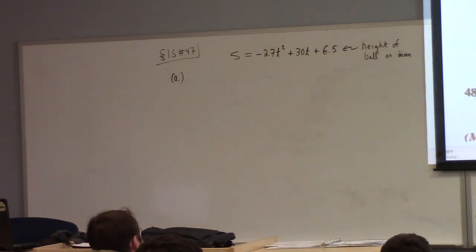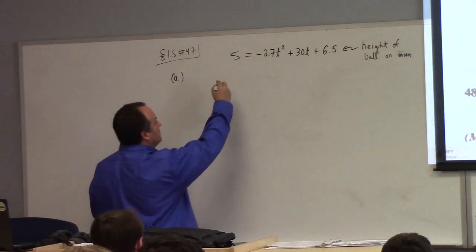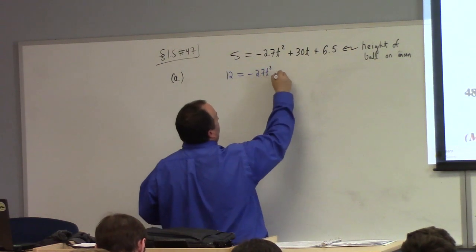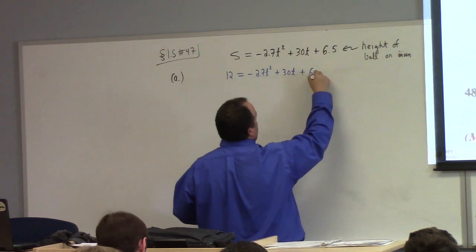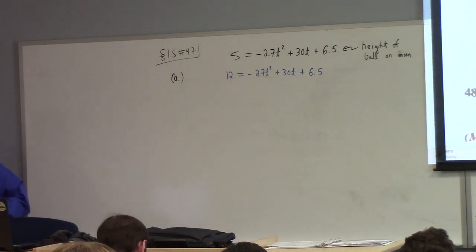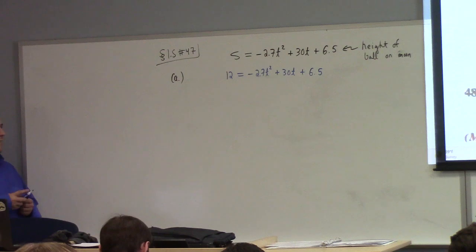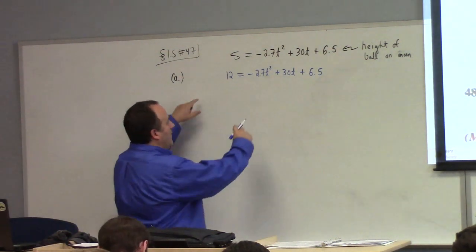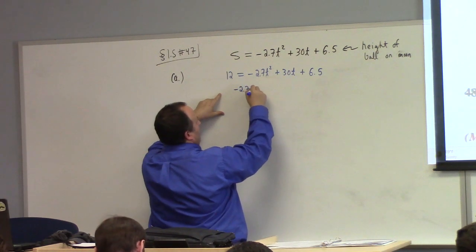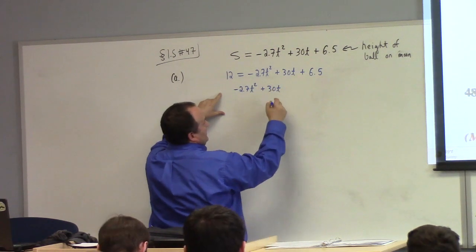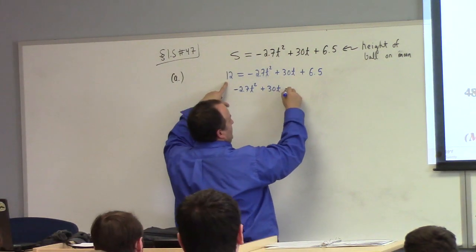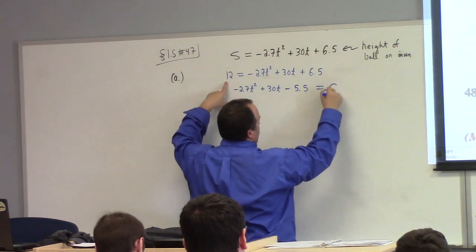We're up against 12 is equal to minus 2.7 T squared plus 30 T plus 6.5. How do we solve this equation? What I'm going to do is rewrite it as minus 2.7 T squared plus 30 T. What is 6.5 minus 12? Minus 5.5. That's equal to 0.